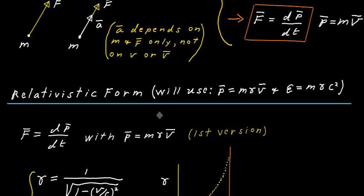To get the relativistic version of Newton's second law, I'll use two equations from special relativity: the relativistic momentum p equals m·gamma·v, and the relativistic energy E equals m·gamma·c squared. To get the relativistic form, you take Newton's law in the form F equals dp/dt and replace p by the relativistic momentum m·gamma·v. Written this way, this is the first version of the relativistic form of Newton's second law.